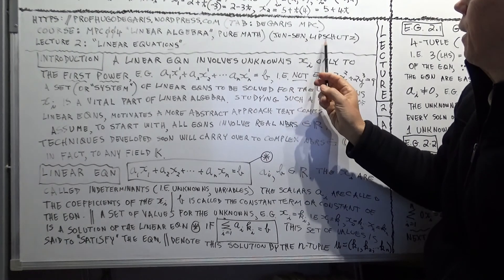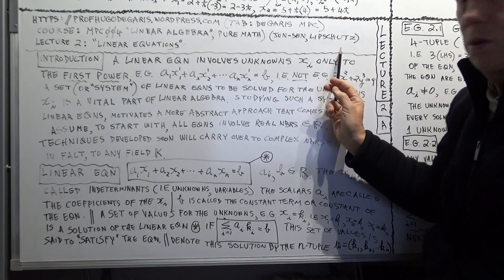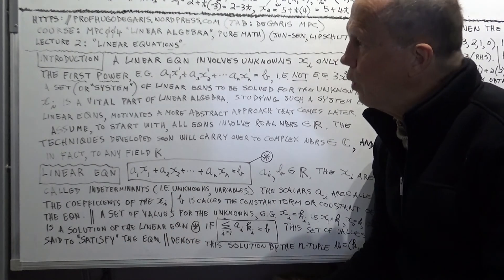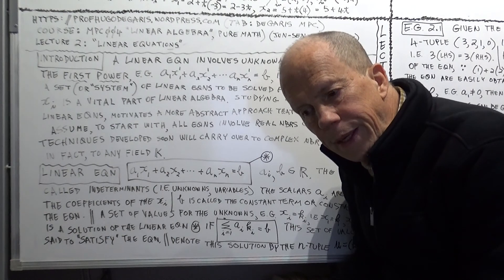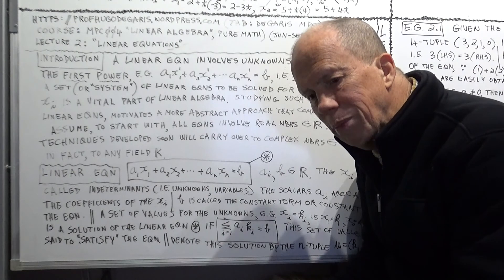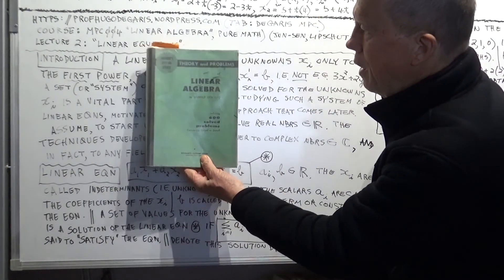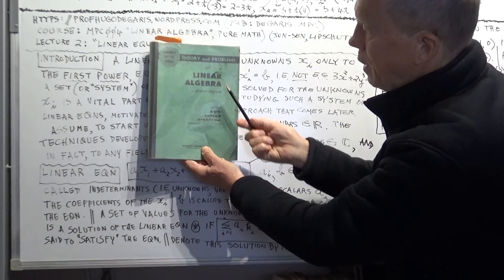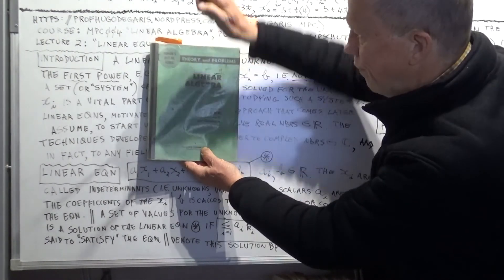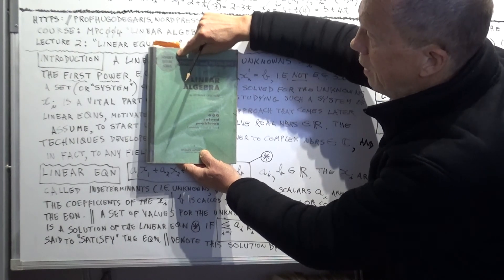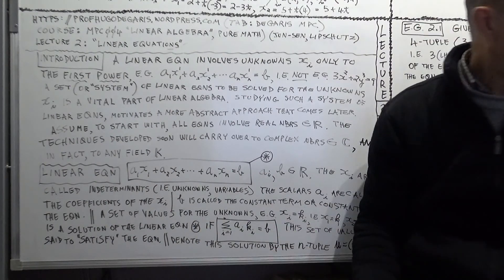It's at junior and senior level. The author of the text is Lipschutz. I usually do this at the beginning of each lecture, but not each session, because it gets a bit tedious. Here's the text I'm using — it's by Lipschutz, called Linear Algebra, in the Schaum series of textbooks, usually undergrad level.